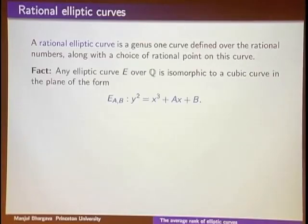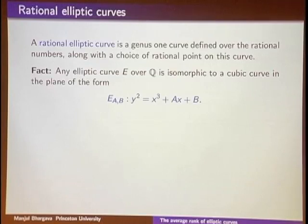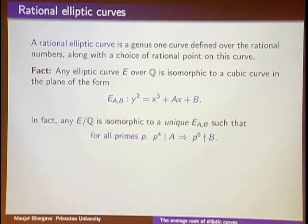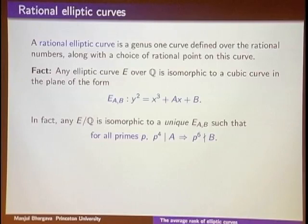More concretely, any elliptic curve E over Q can be written as y² = x³ + ax + b, where a and b are rational numbers — in fact, you can take them to be integers. Moreover, any elliptic curve over Q can be written uniquely in this form where a and b are integers satisfying: for all primes p, if p⁴ divides a, then p⁶ does not divide b.